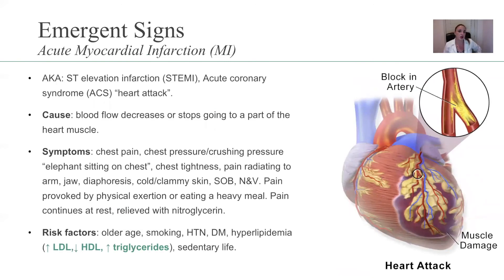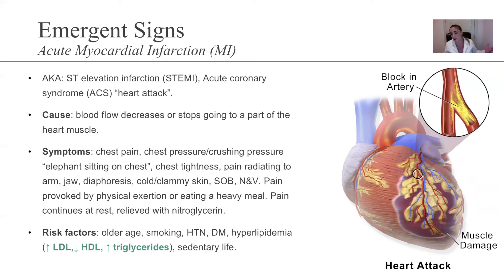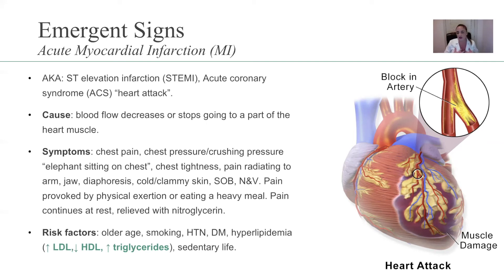Let's talk about MI — acute myocardial infarction. Your acute myocardial infarction is also known as ST elevation infarction, also known as STEMI, also known as acute coronary syndrome, or in simpler terms, your heart attack. What is happening? There's blood flow that is decreased to the heart, or it stops going into part of the heart muscle — in this picture it could be because of a blocked artery. If you stop getting blood supply to the heart, it hurts. The heart is a muscle — it will hurt.